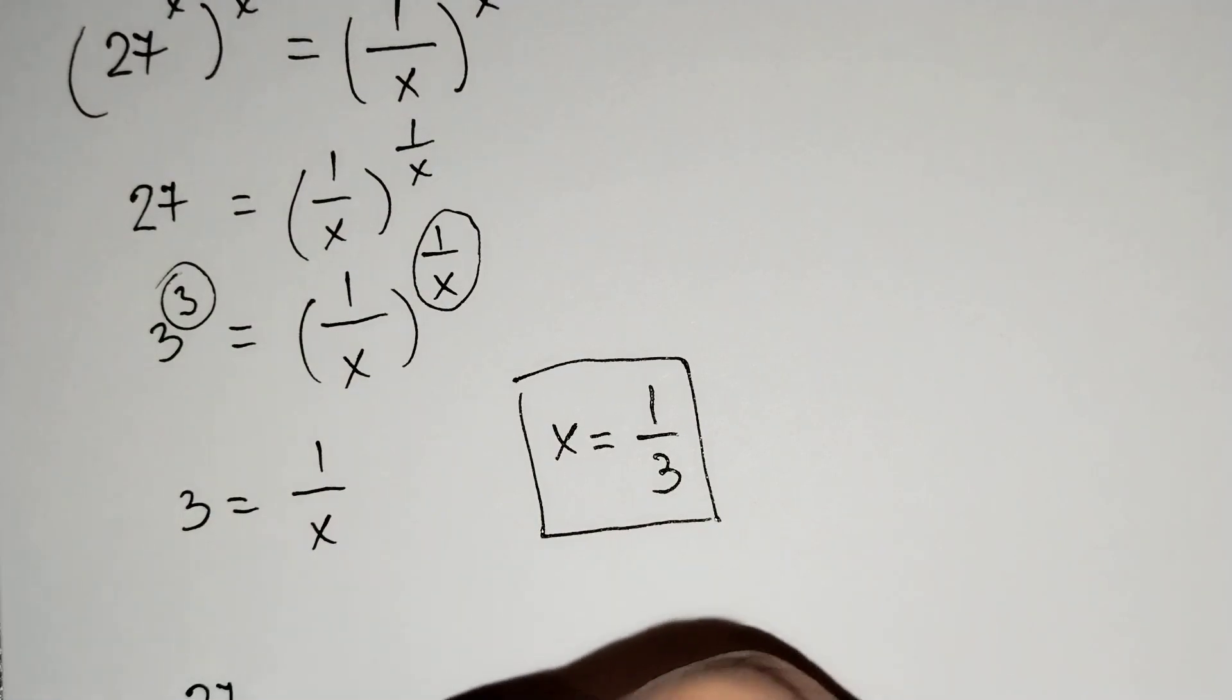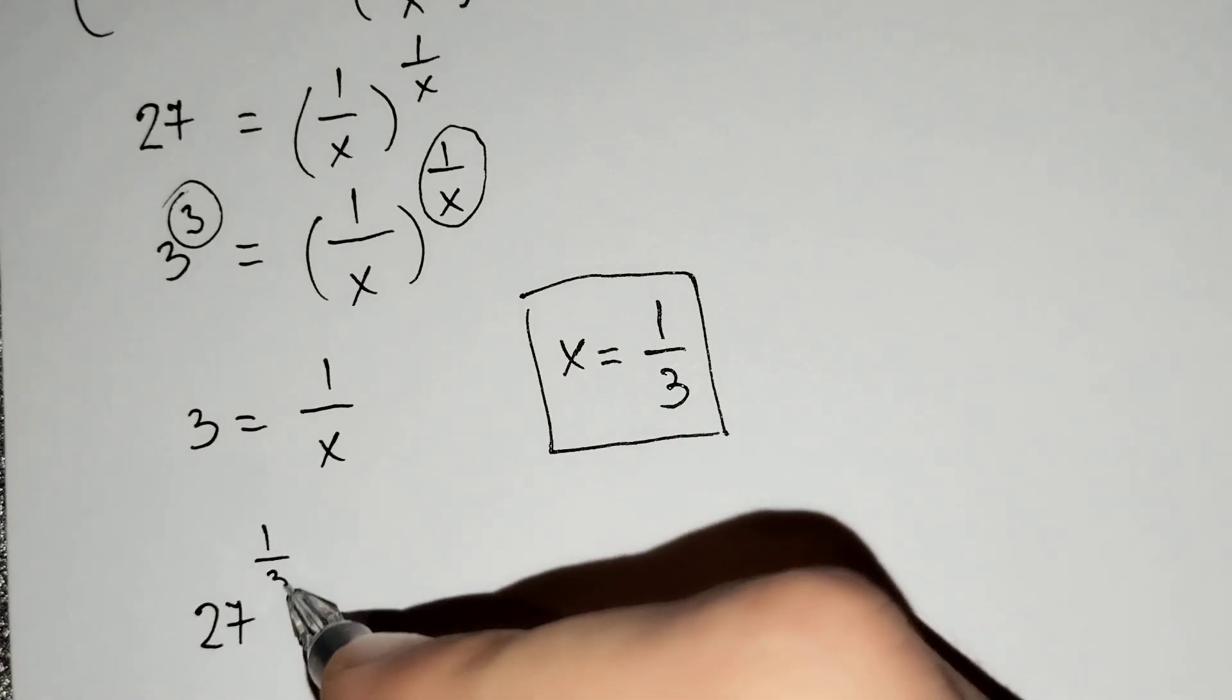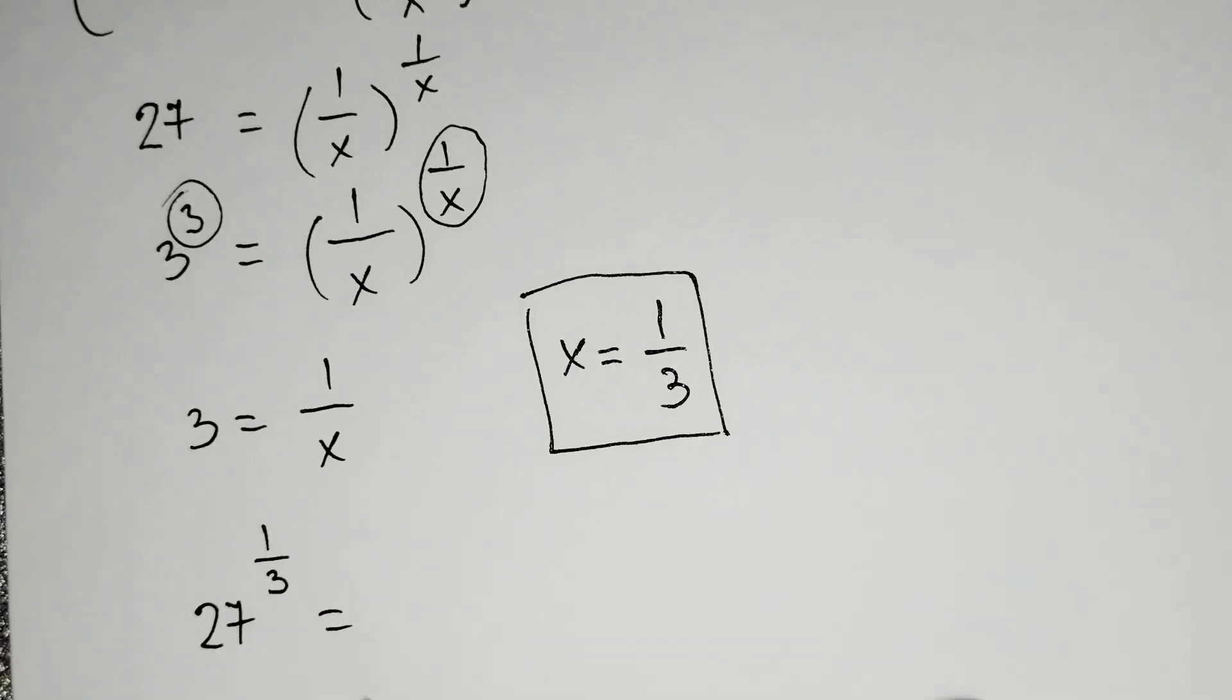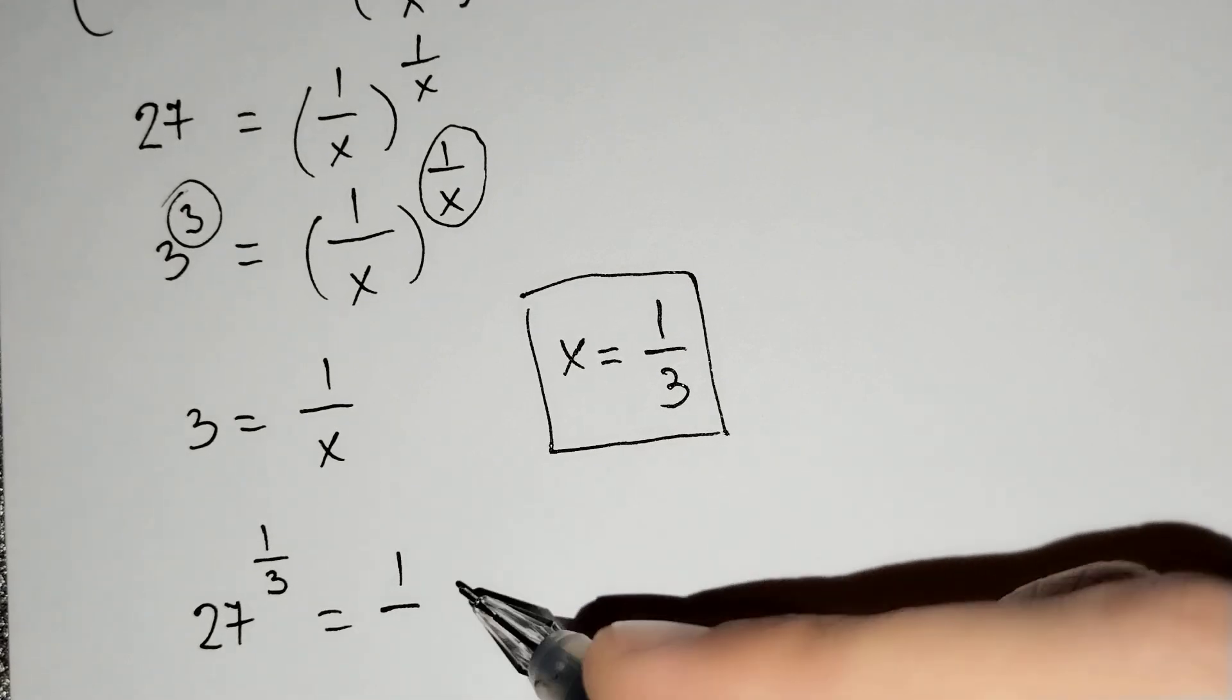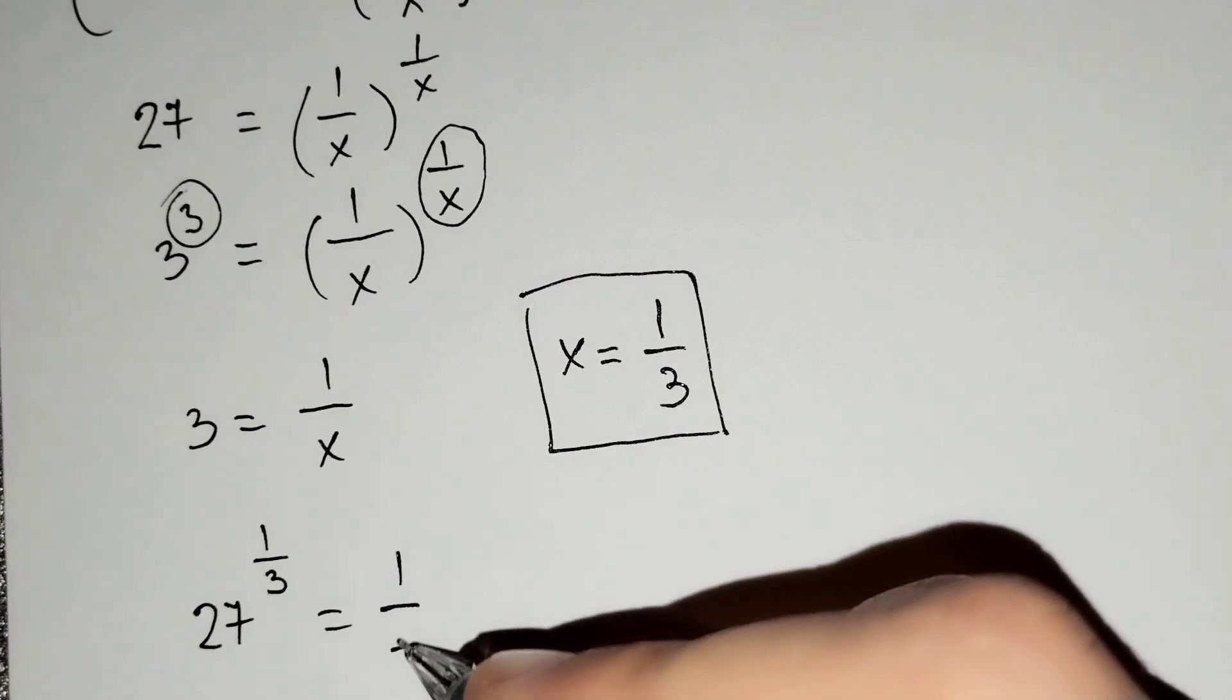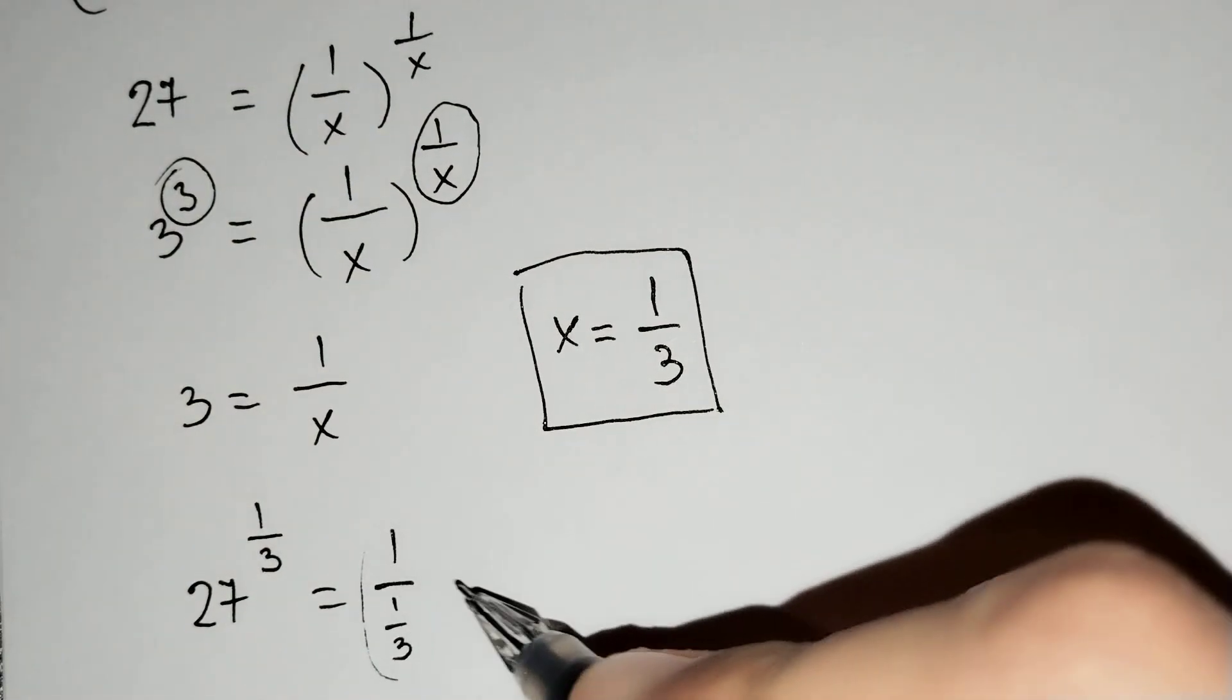27^(1/3) should equal 1/(1/3), which equals 3.